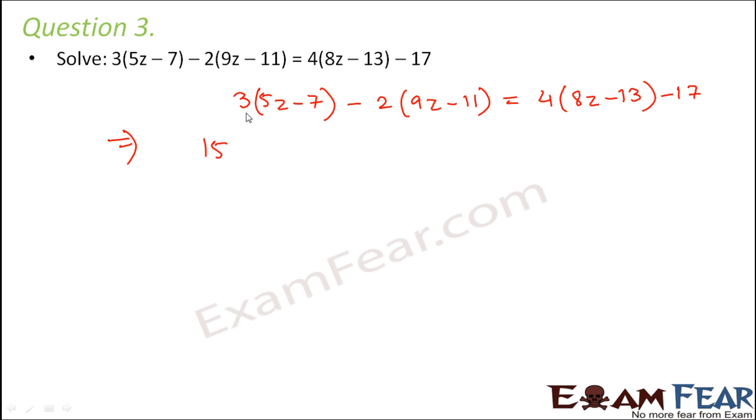So 3×5 is 15z - 21 - 18z + 22 is equal to 32z - 52 - 17.